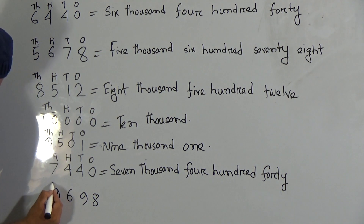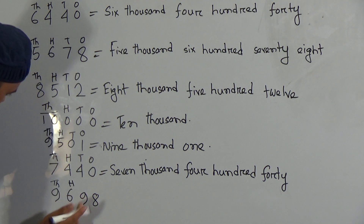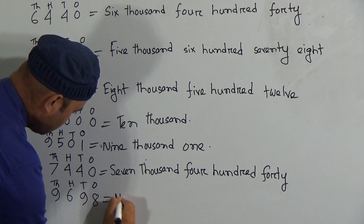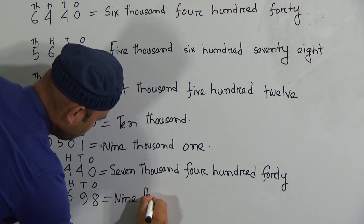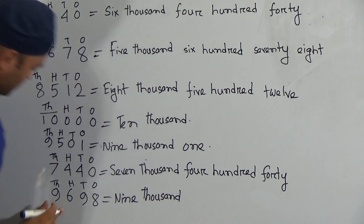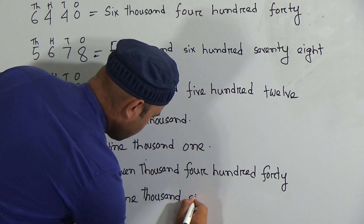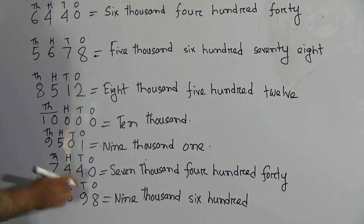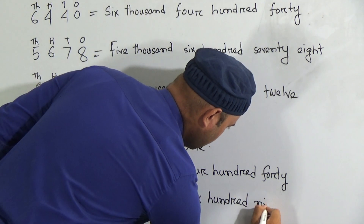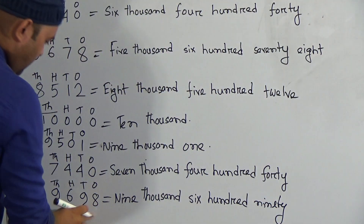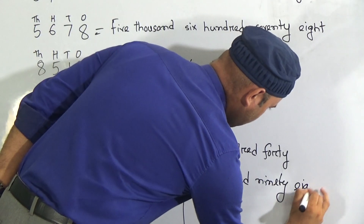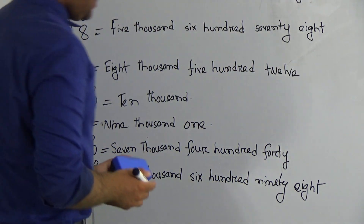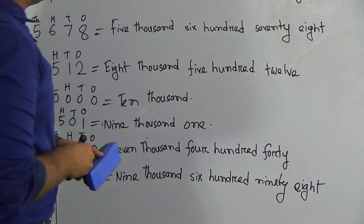The last number: 9 is in the thousand place, 6 is in the hundred place, 9 is in the tens place — meaning ninety — and 8 is in the ones place. So in words this is nine thousand six hundred ninety-eight.